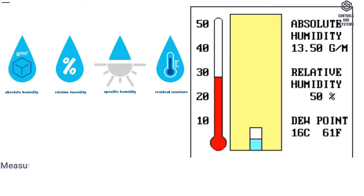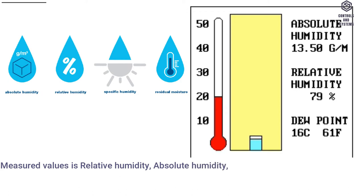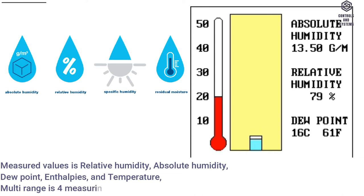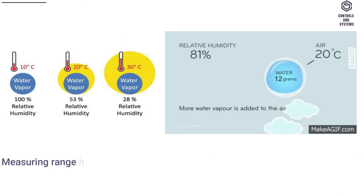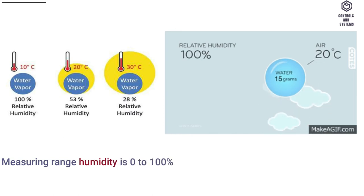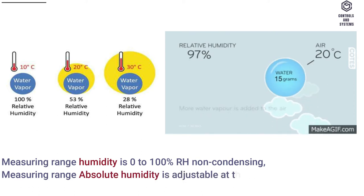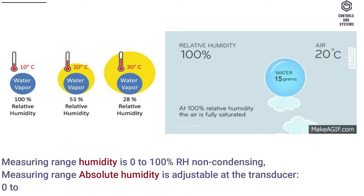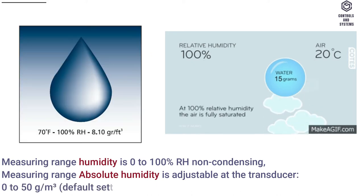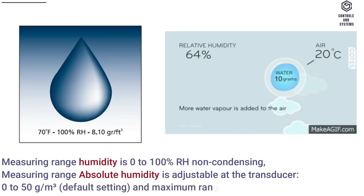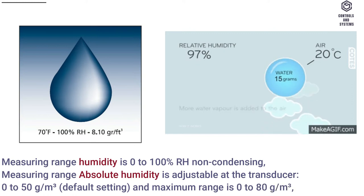Measuring Data: Measured values are relative humidity, absolute humidity, dew point, enthalpy, and temperature. Multi-range is 4 measuring ranges selectable. Measuring range humidity is 0 to 100% RH, non-condensing. Measuring range absolute humidity is adjustable at the transducer: 0 to 50 g/m³ default setting, and maximum range is 0 to 80 g/m³.